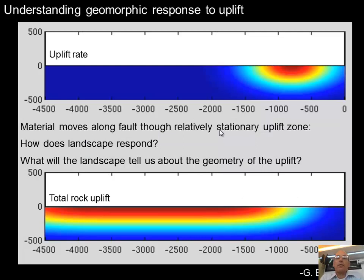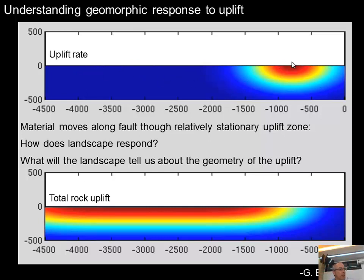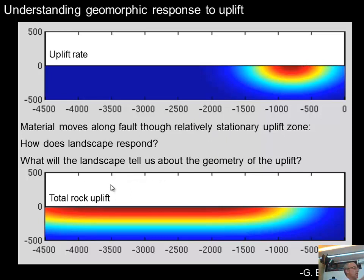Here's the idea of this pressure ridge. This is a map with distance in meters, and the San Andreas Fault is at the back. There's a stationary uplift zone: material comes into that uplift zone, lifts up, and then is carried away. This shows the instantaneous uplift rate and the total rock uplift — material comes in, lifts up, stays high, and gets offset.